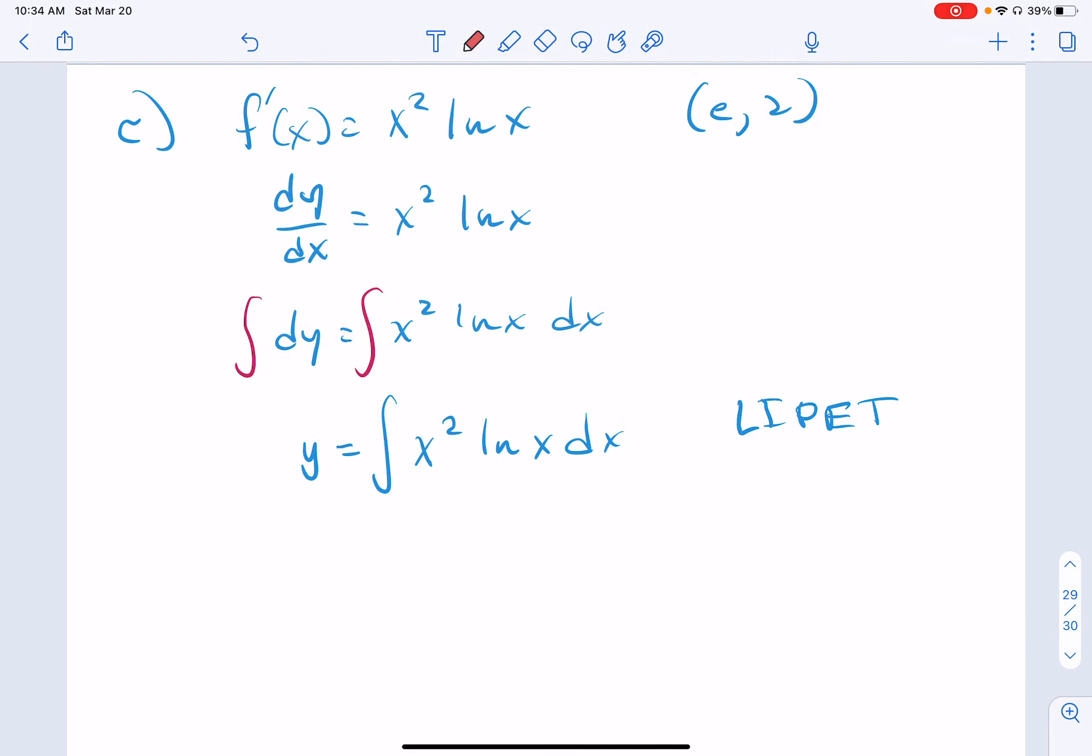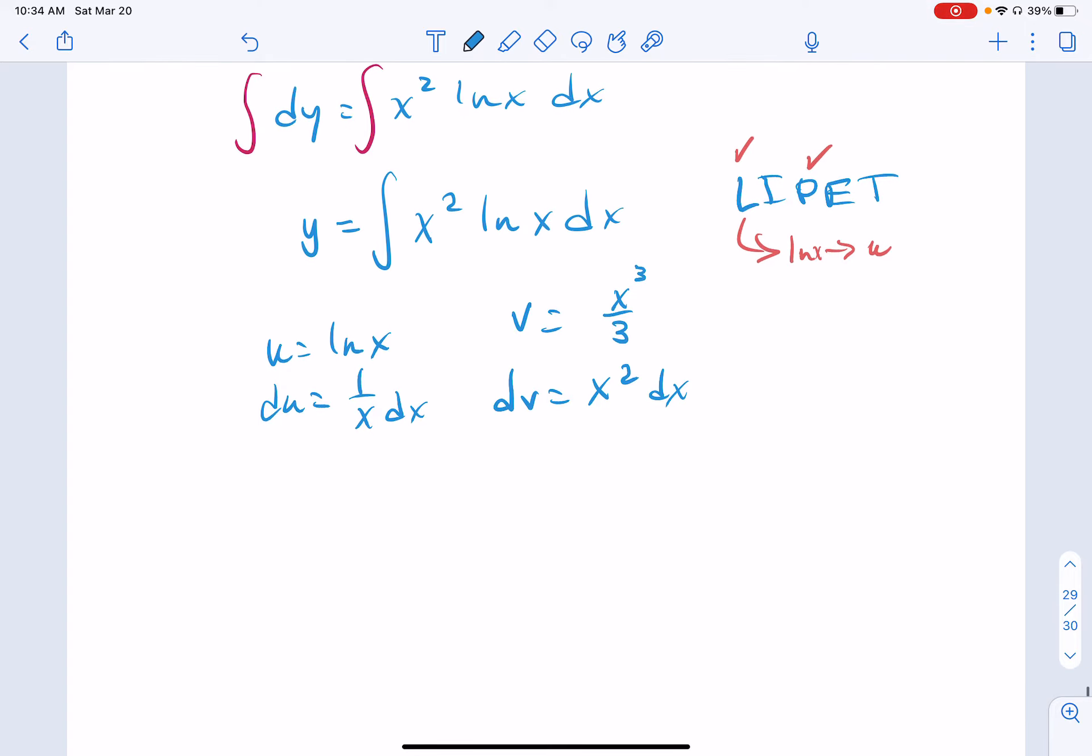So speaking of Lippitt, we have x squared, which is our power function. We have natural log of x, which is our logarithmic function, meaning that the natural log of x should be equal to our u. u is equal to the natural log of x. du should be equal to 1 over x dx. The other parts, the polynomial parts, dv is equal to x squared dx. Take its antiderivative. Remember, you've got to add 1 to the exponent, so x to the third over 3.